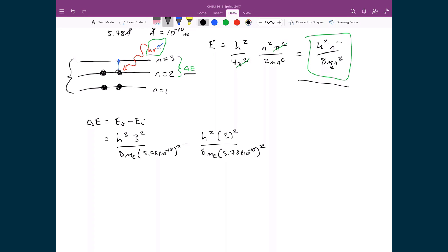This has now become a problem or an exercise of substituting in variables, and now just solving for the number itself. So I'm going to distribute out all the common factors here. So I've got h squared, so that's 6.626 times 10 to the minus 34. That value is squared.